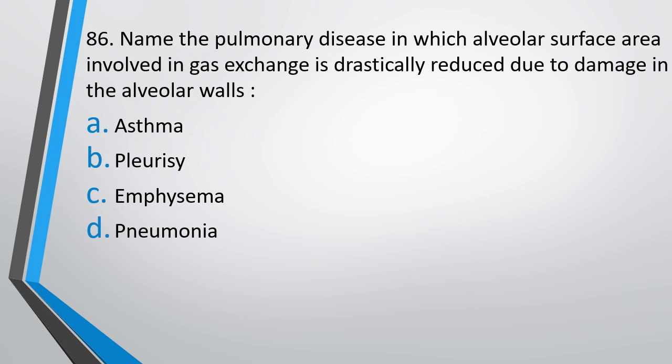Question No. 86. Name the pulmonary disease in which the alveolar surface area involved in gaseous exchange is drastically reduced due to damage to the alveolar walls. Options: asthma, pleurisy, emphysema, pneumonia. The correct answer is option C, emphysema. The main cause of emphysema is smoking.